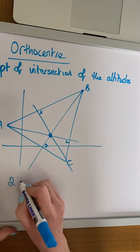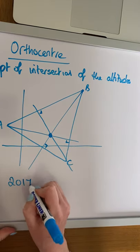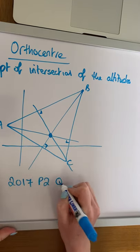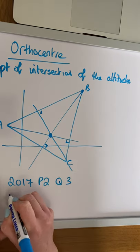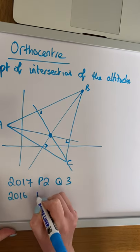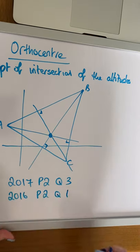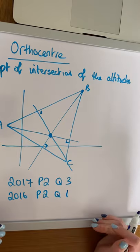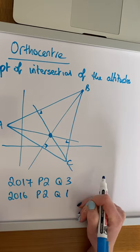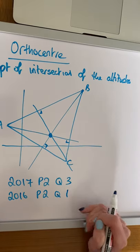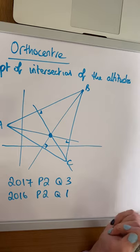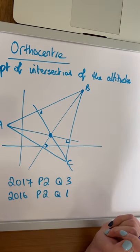Based on this, I want you to go and try some exam paper questions on finding the orthocenter of the triangle. Try 2017 Paper Two Question Three and 2016 Paper Two Question One. Watch the video in full, attempt these two questions, and I will post the solutions on our Google Classroom. Thanks, guys!